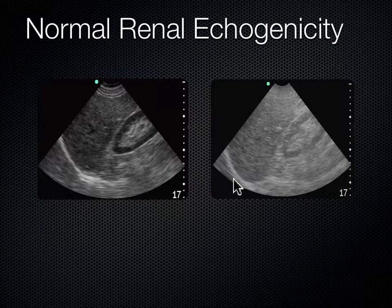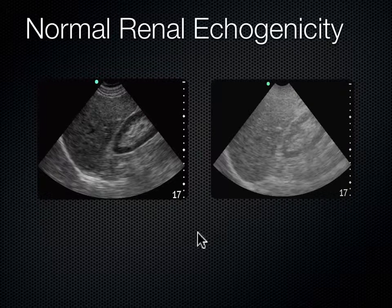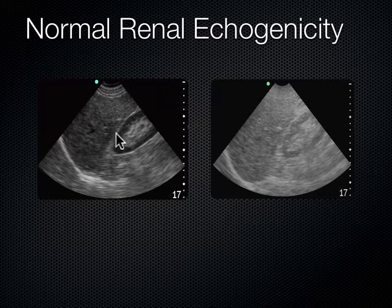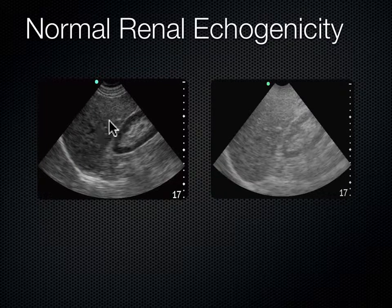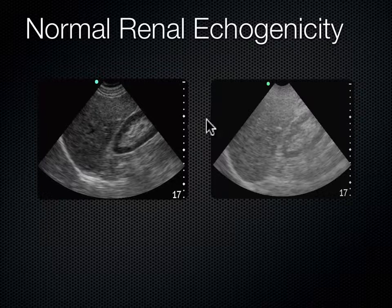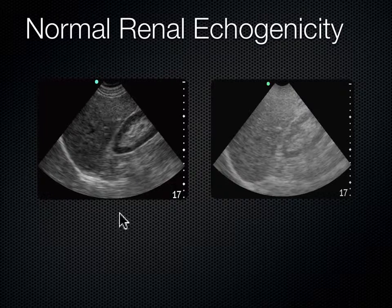If you look at these two images, they both range down to 17 centimeters in depth, but the difference is the gain. The right image here is over-gained—pretty washed out—whereas the left image shows the cortex of the kidney as slightly darker than the liver. If you can make out those subtleties, you've got your gain adjusted just right. That's the art of gain. I know I've got my gain set right when my kidney's cortex looks darker than my liver or spleen.